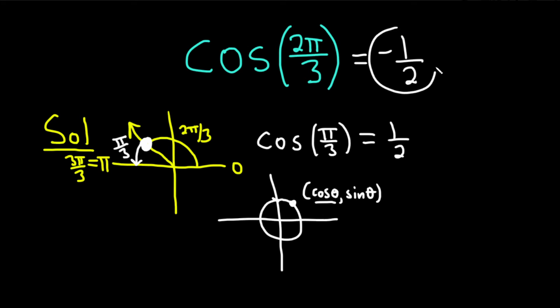Super powerful stuff, right? So a lot of knowledge here in this simple little problem, cosine of 2π over 3. This is what people struggle with, I think, in trig.